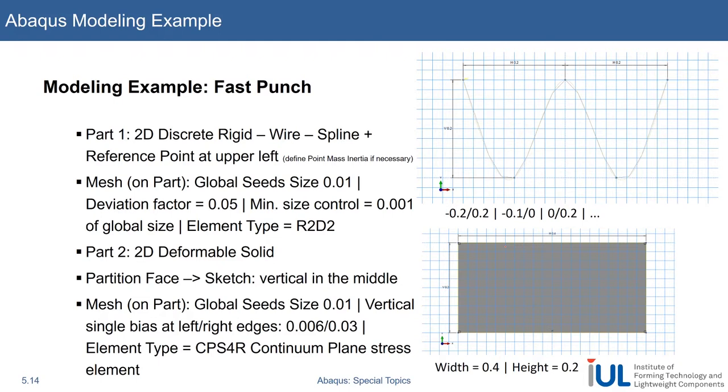We will start with the 2D discrete rigid spline. This will be a small example, literally a small example this time. These are the points we will use. We will define five points of this spline given down here, and we will ram this punch into a block of width 0.4 and height 0.2.